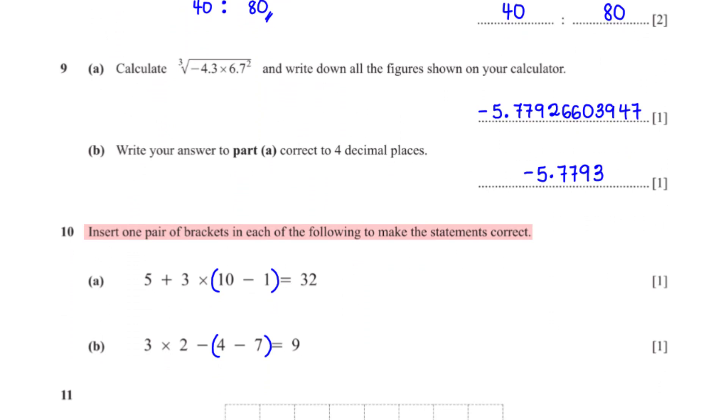Insert one pair of brackets in each of the following to make the statements correct. To make this correct, we put a pair of brackets around 10 minus 1. 10 minus 1 is 9. So 5 plus 3 times 9 gives us 32. To make this correct, we put a pair of brackets around 4 minus 7. 4 minus 7 is negative 3. So 3 times 2 minus negative 3 gives us 9.